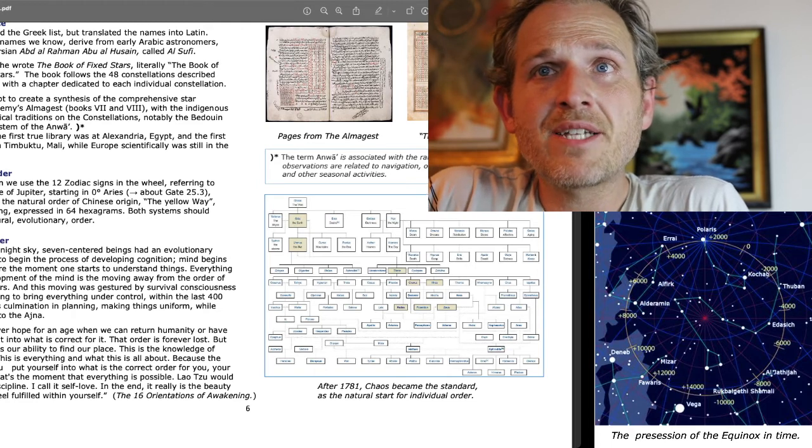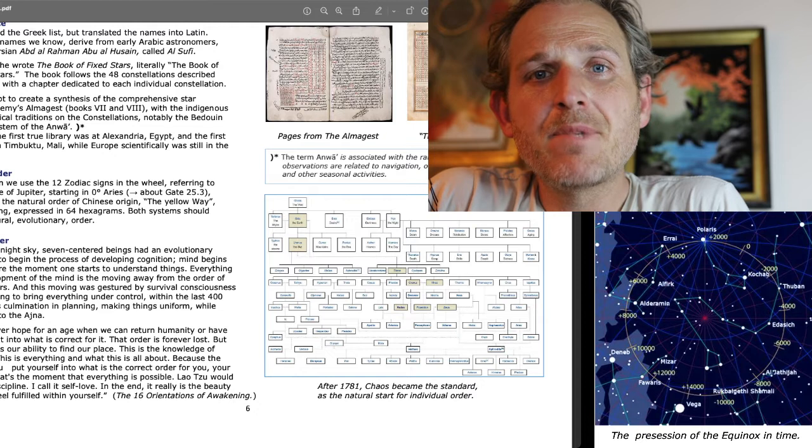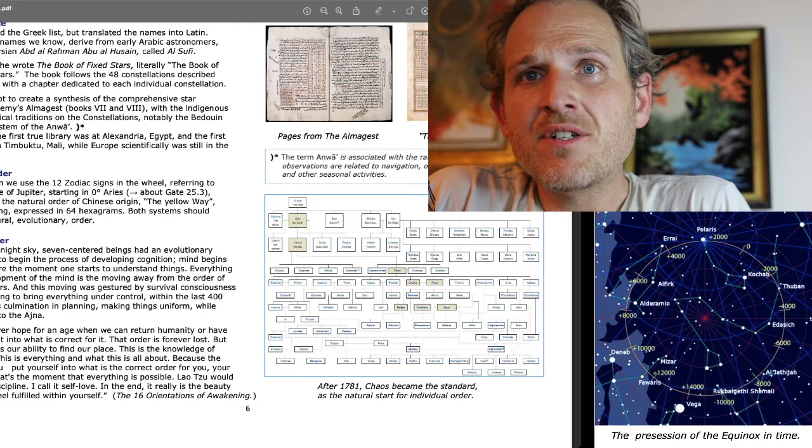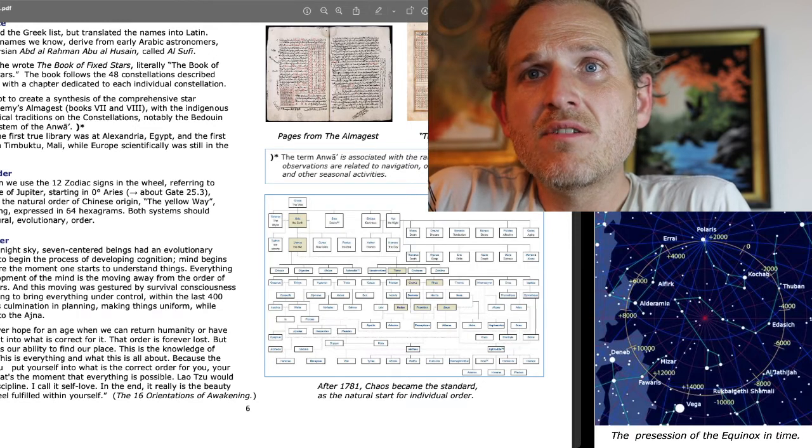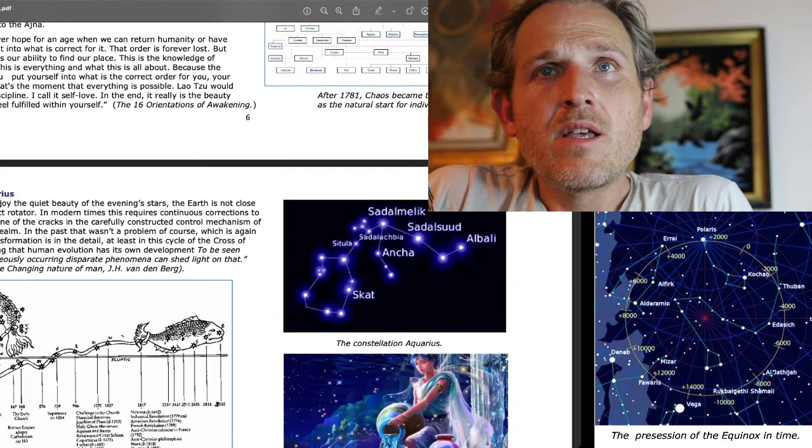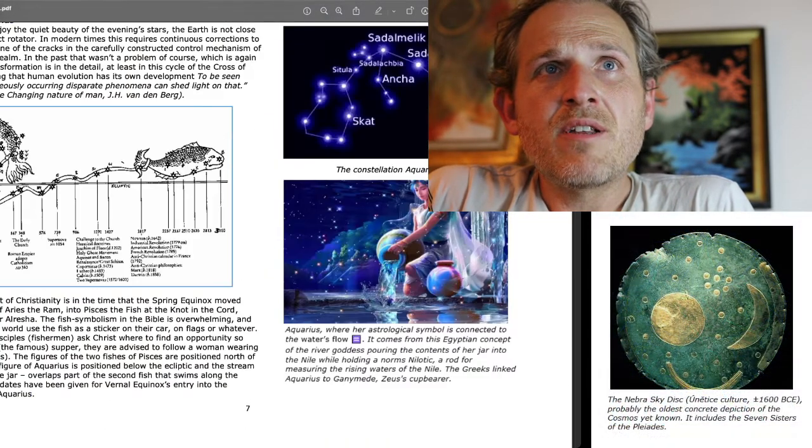And that's an excerpt from the 16 Orientations of Awakening. Von Denenberg points out, after 1781, chaos became the standard as the natural start for individual order. All right, and this will be our last page this time.